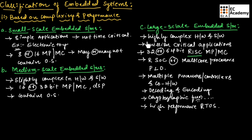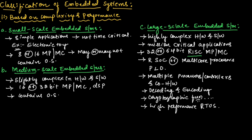Large scale embedded systems consist of highly complex hardware and software and are used for mission critical and time critical applications. Examples include decoding and encoding systems and cryptographic function implementations. These systems consist of high performance real-time operating systems. This is about the classification of embedded systems. Hope you have understood the topic. Thank you.